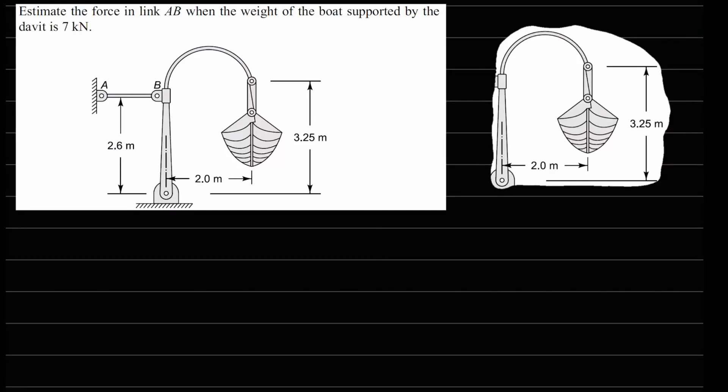This is problem 1.12 from your textbook. It says estimate the force in link KB when the weight of the boat supported by the davit is 7 kilonewtons. For this, we will analyze this part of the structure and draw the FBD.